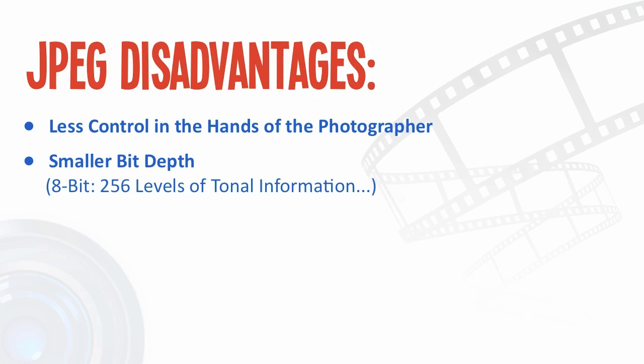Compared to a standard 12-bit RAW file with 4,096 levels of tonal information, a JPEG file is discarding 3,840 levels and only keeping 256. This means any further editing risks the introduction of digital artifacts depending on what adjustments you make. Having a smaller bit depth also limits the potential dynamic range your camera can capture, making high contrast scenes harder to reproduce without an obvious loss in detail, which usually occurs in the highlights.